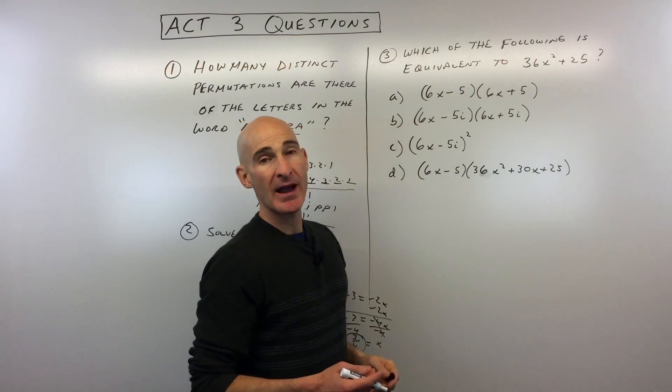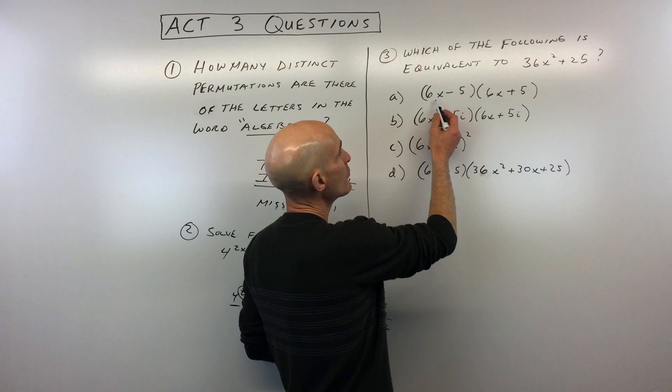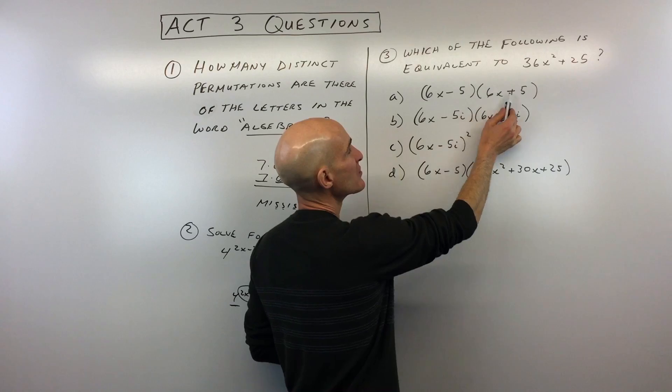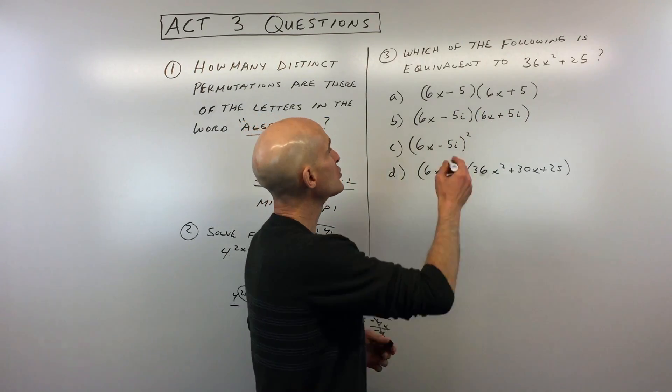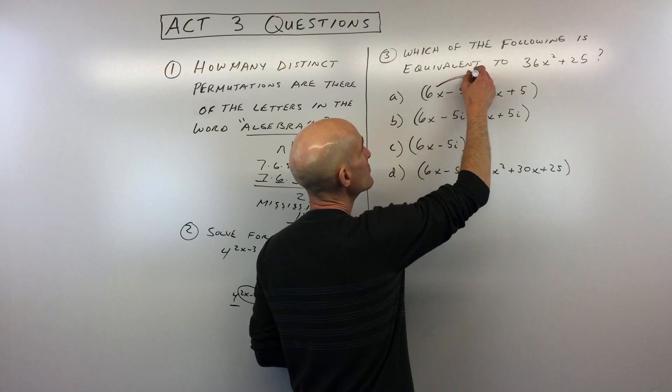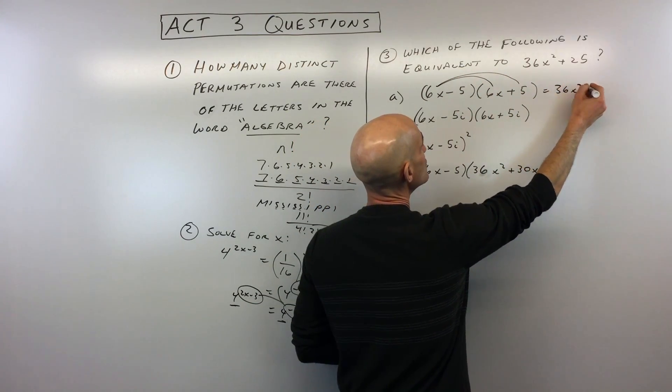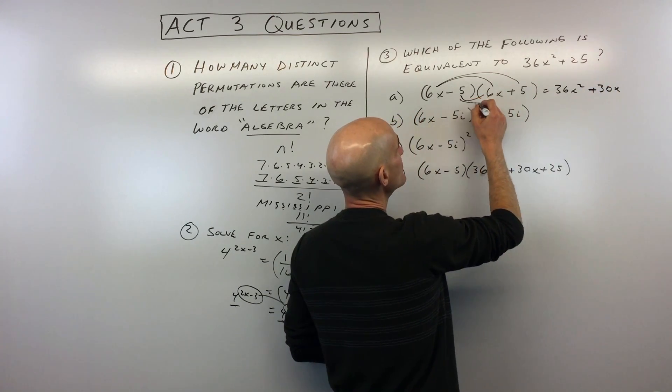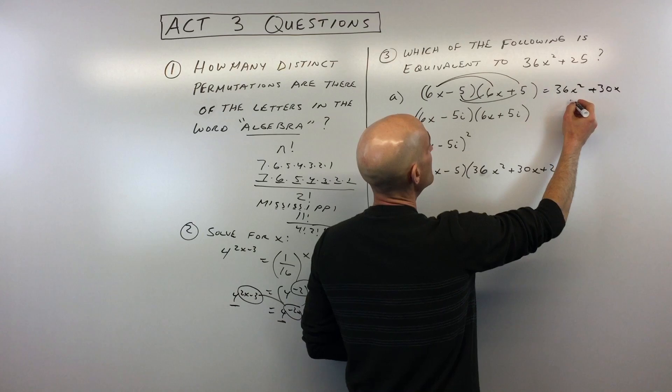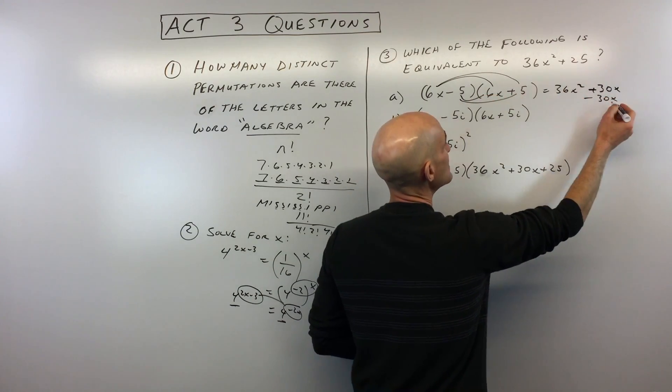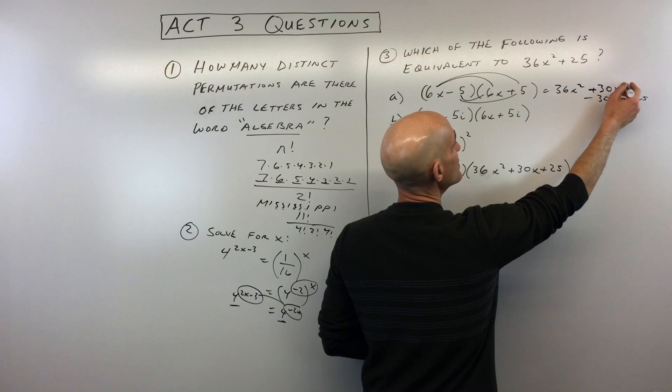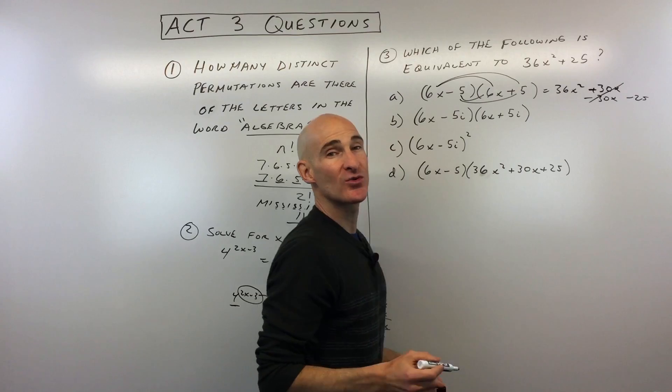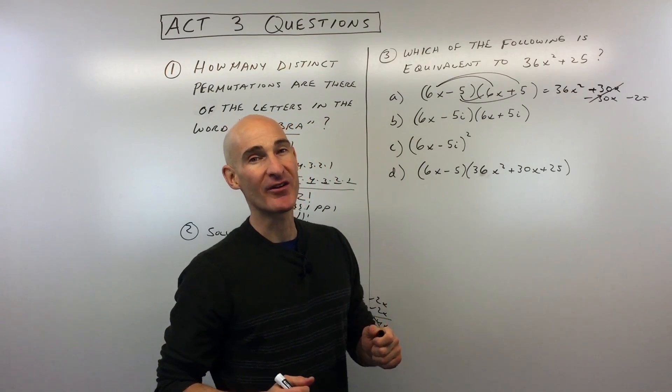So for the first one, you can see this is a binomial times a binomial. And if you recognize this, this is a sum and difference pattern. You're adding and subtracting, but the terms are the same. So there's a shortcut to this, but we'll just do the distributive property. So distribute, that's going to give us 36 X squared. This is going to give us plus 30 X. And then we distribute the negative five, we get negative 30 X. And negative five times five is negative 25. So you can see those are canceling and we're left with 36 X squared minus 25, not plus 25. So we're close, but not quite there.